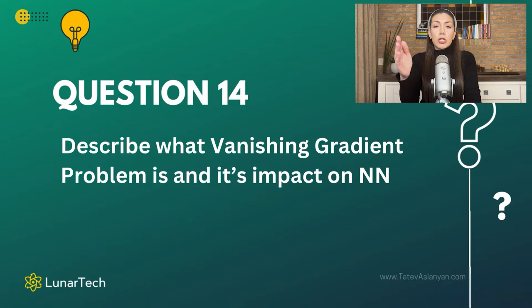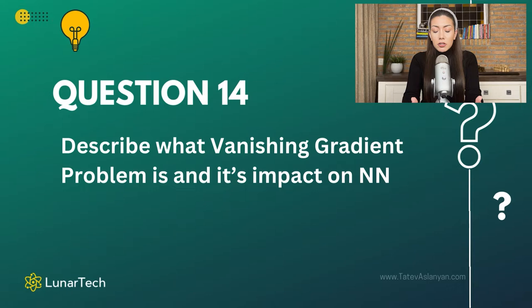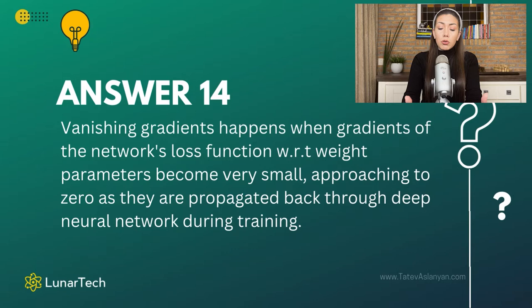The result of this vanishing gradient is that the network is no longer able to learn dependencies in the data effectively, and the model is no longer able to update its parameters effectively. This means the algorithm will not be properly optimized and we will end up with a model that was unable to learn the actual dependencies in the data.